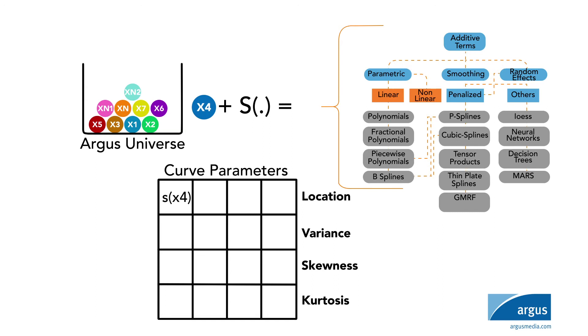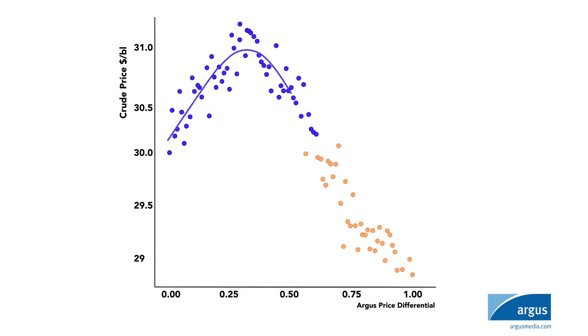Basically, to do this, the algorithm adds a function to each driver. In this example, the S function is selected from our universe of functions and applied to the X4 driver within the location parameter. One of the ways we assess a non-linear relationship with the S function is an approach based on the concept of weighting observations locally.